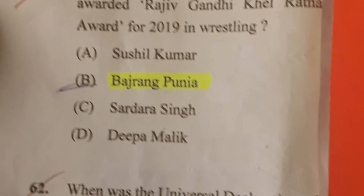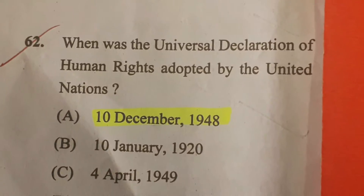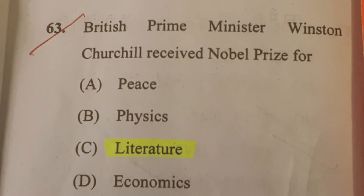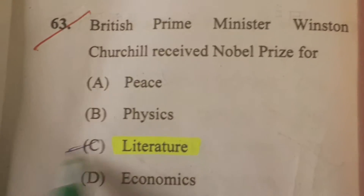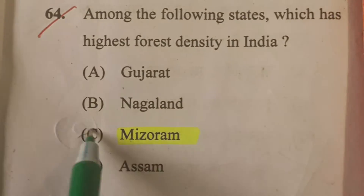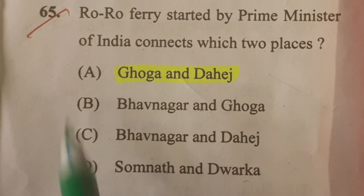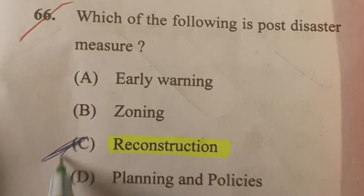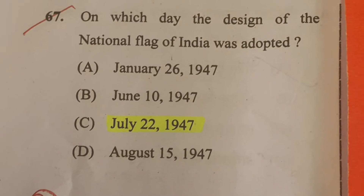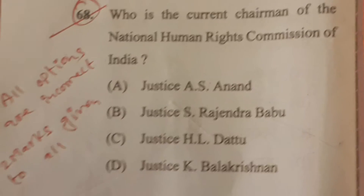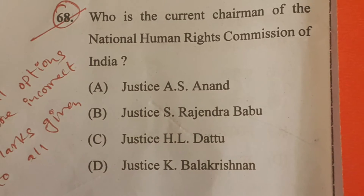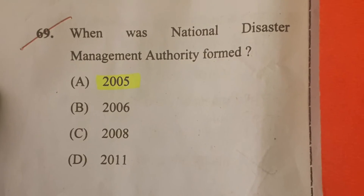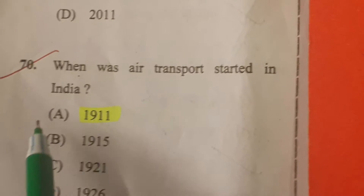Next, 62, answer is C. 63, answer is C. 64, answer is C. 65, answer A. 66, answer is C. 67, answer is C. 68, all options are incorrect. Next, 69, answer is A. 70, answer is A.